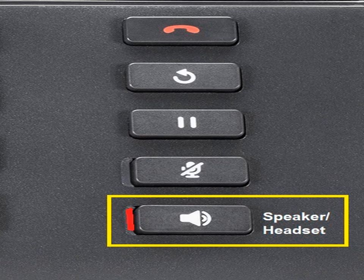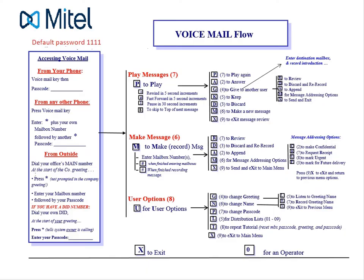Before moving on to voicemail, if you have a 6930 or 6940 phone, you need to go to Settings and find the Bluetooth symbol. When you scroll through Settings you'll see Bluetooth listed there. Go in and you can sync up your Bluetooth. Please refer to your handout or manual for that process — there are people in the office who should know how to do it at this point.